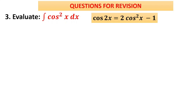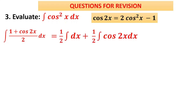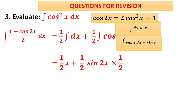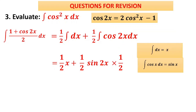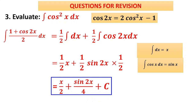Question 3: ∫cos²x dx. Using the formula cos 2x = 2cos²x − 1, we get cos²x = (1 + cos 2x)/2. For sin²x it would be (1 − cos 2x)/2. Split the integral: (1/2)∫dx + (1/2)∫cos 2x dx. Using ∫dx = x and ∫cos x = sin x, the integral of cos 2x is sin 2x/2. Final answer: x/2 + sin 2x/4 + C.